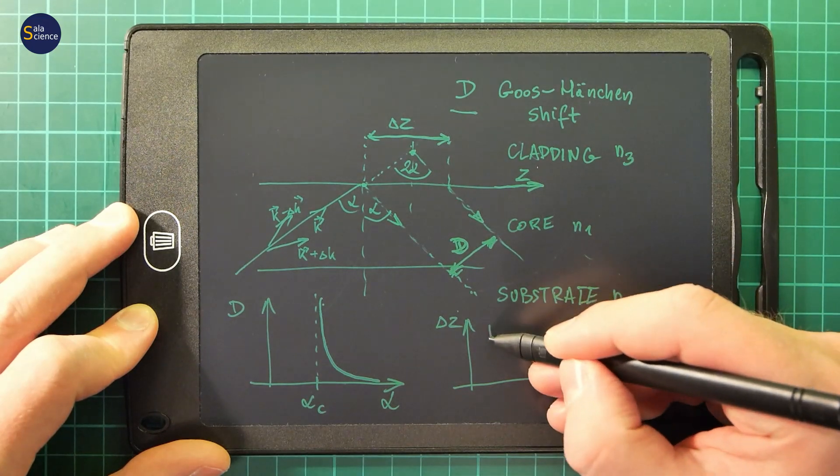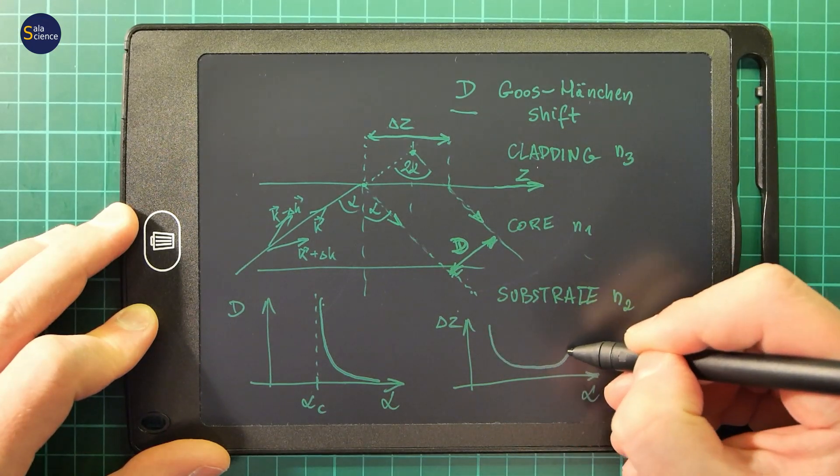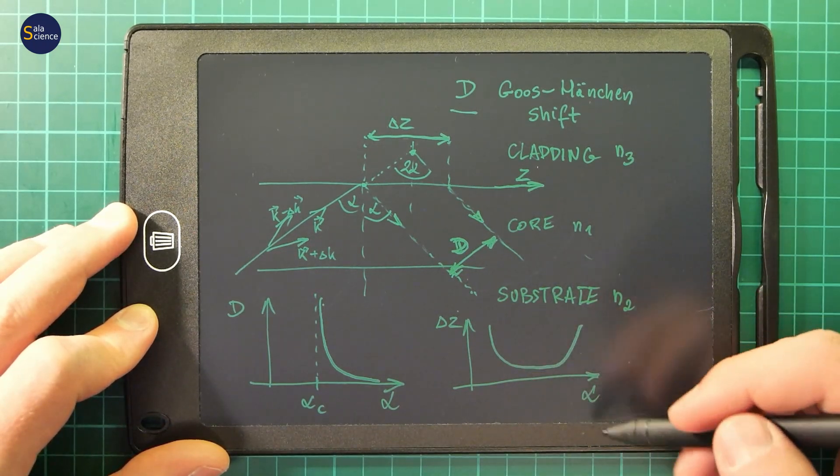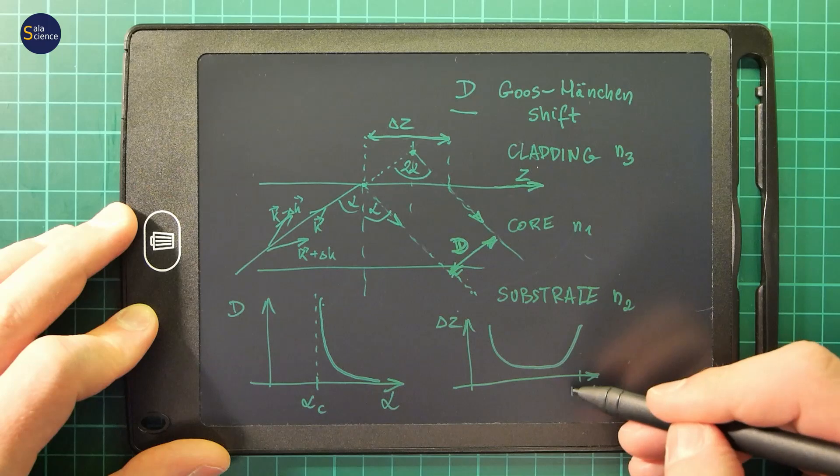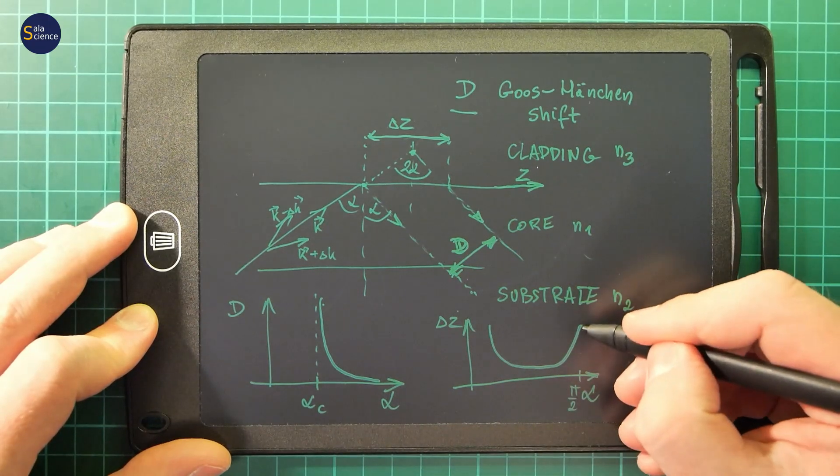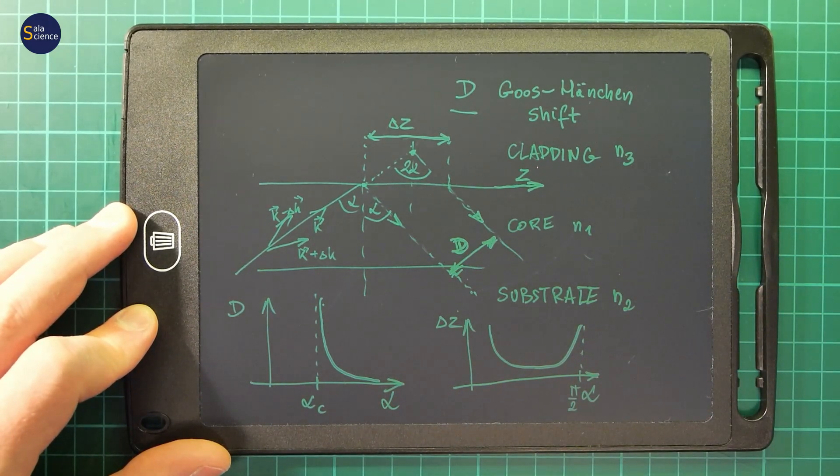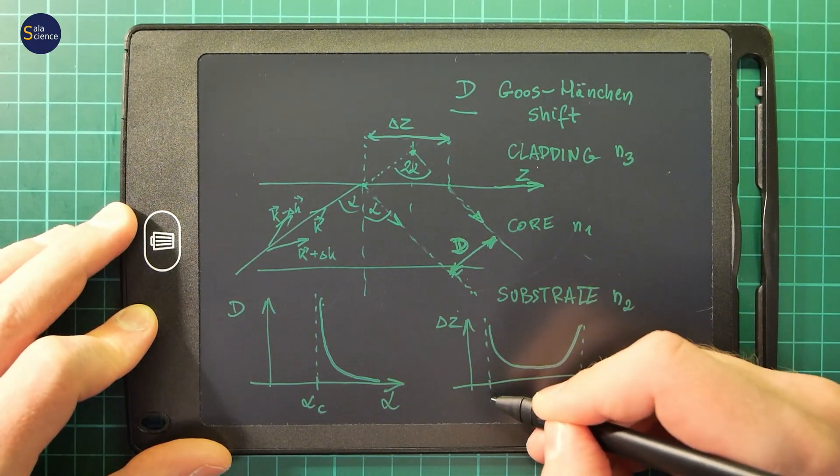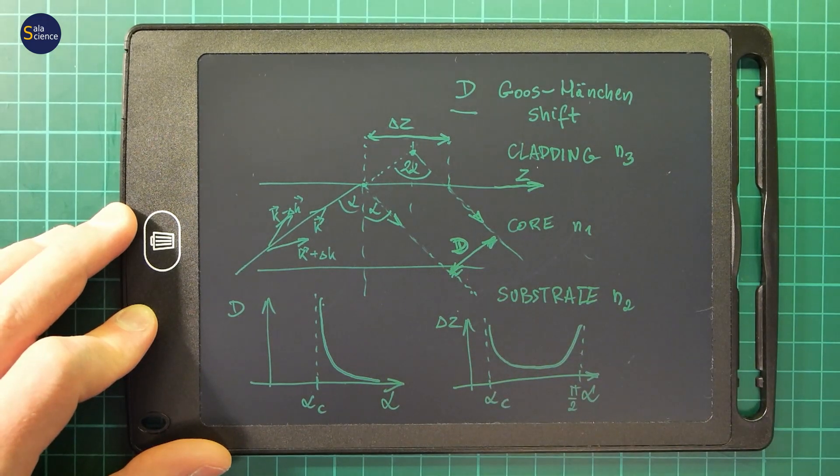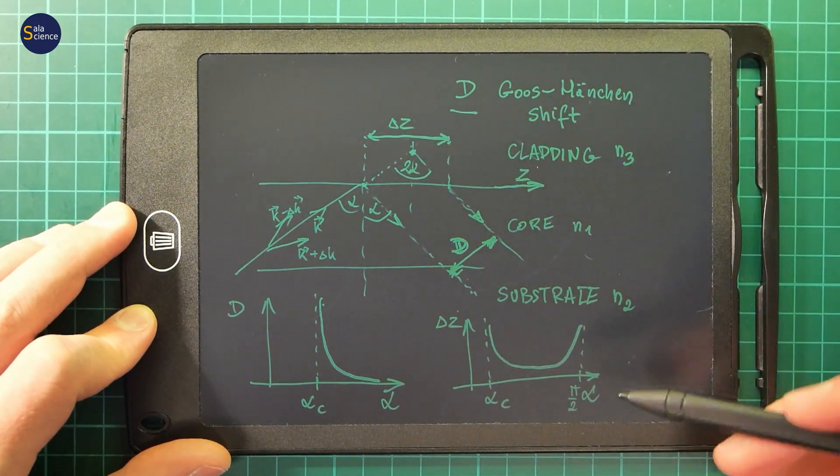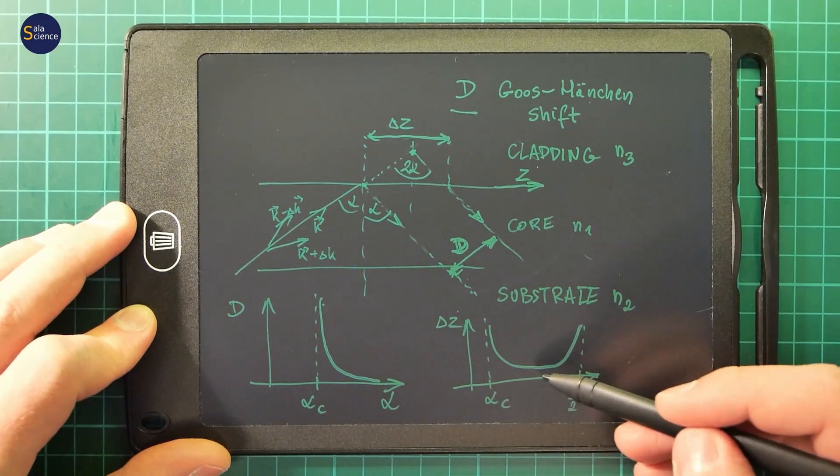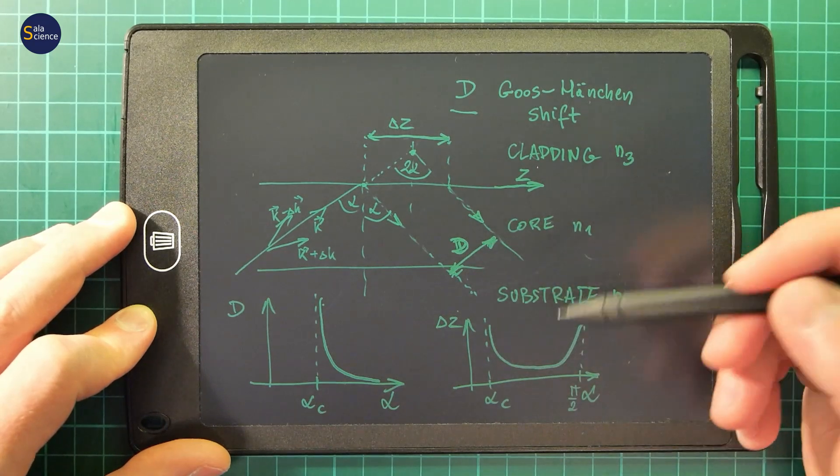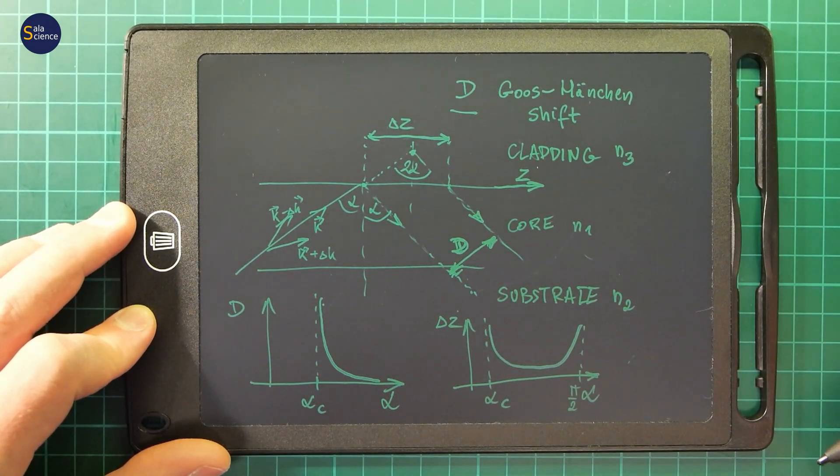So it will have some minimum value. And it will decrease then increase asymptotically for pi over 2, and also here we will have this alpha critical. So this delta z on the other hand will increase while we increase the angle of incidence and it will increase as we are getting closer to the critical angle.